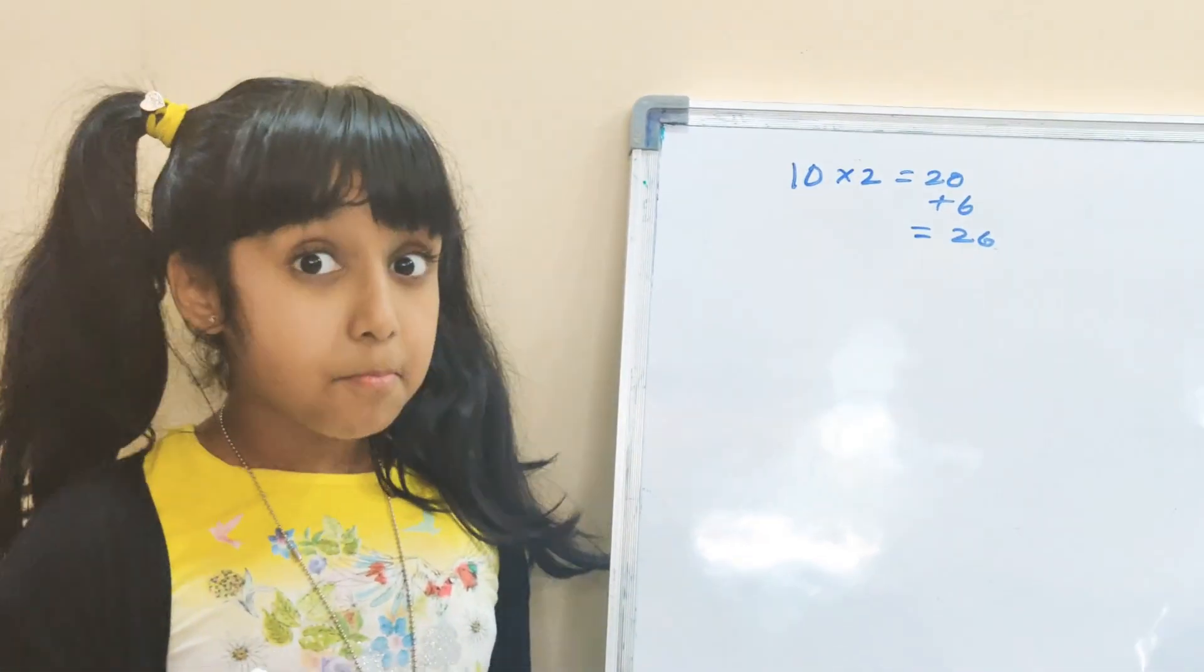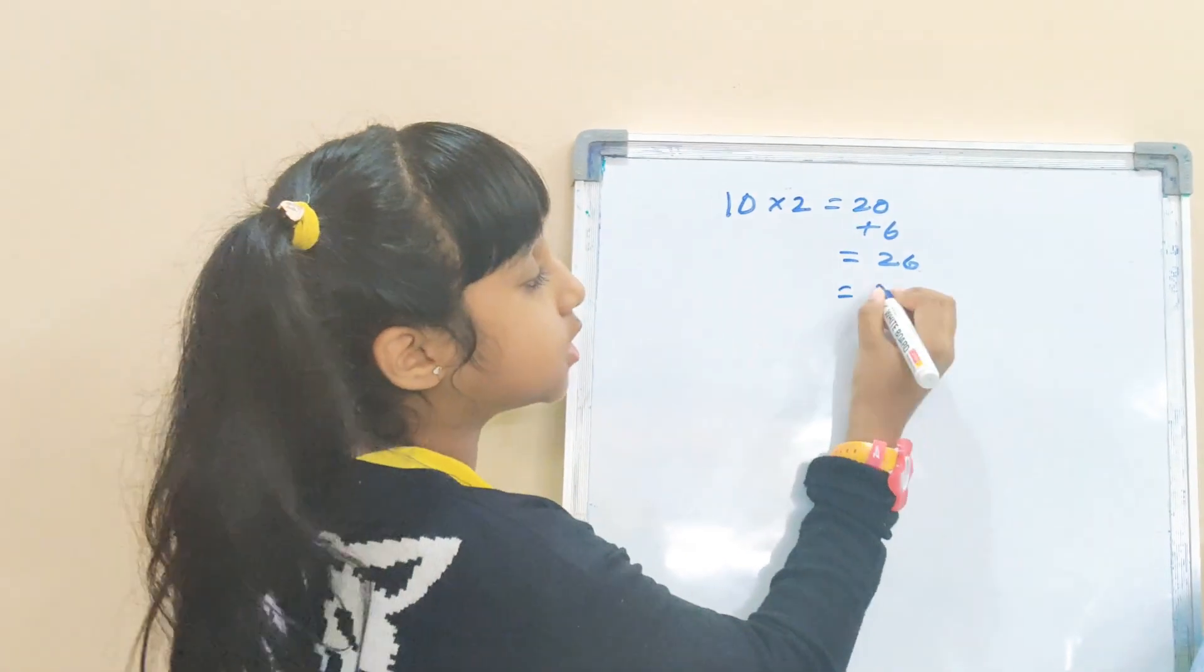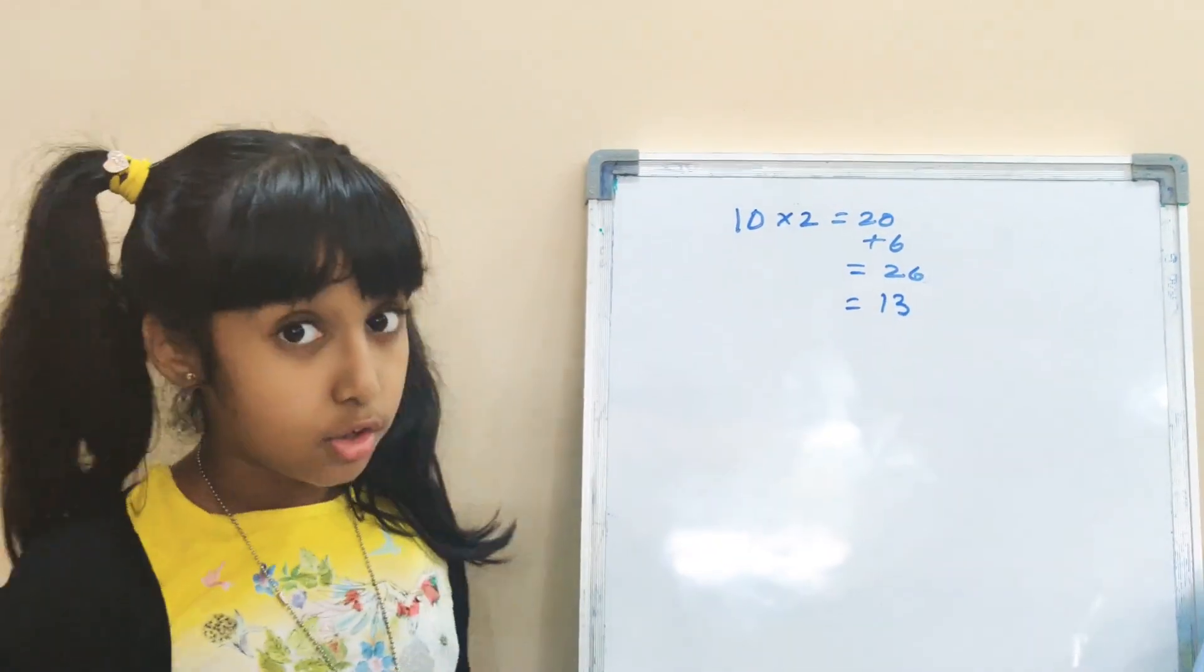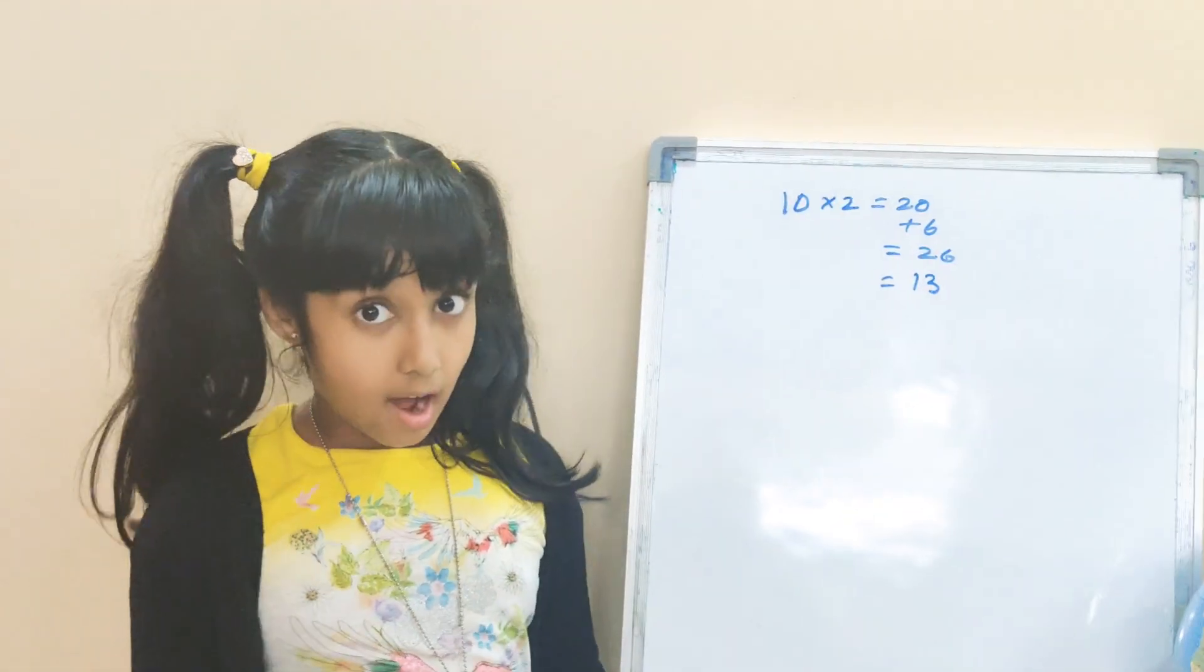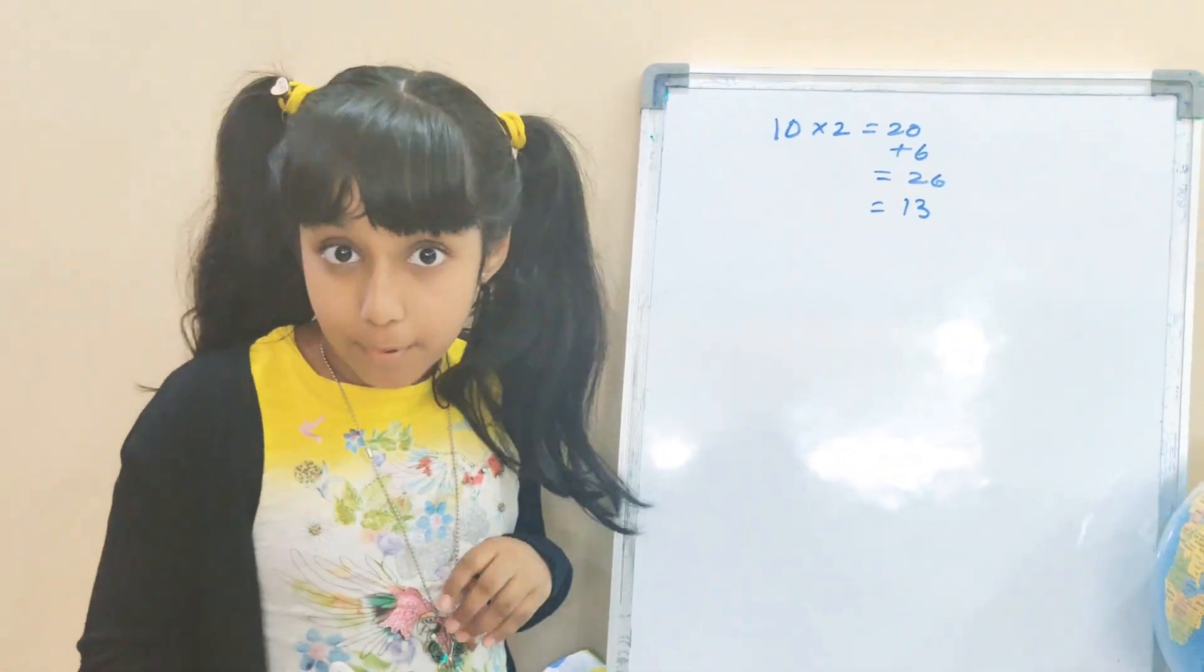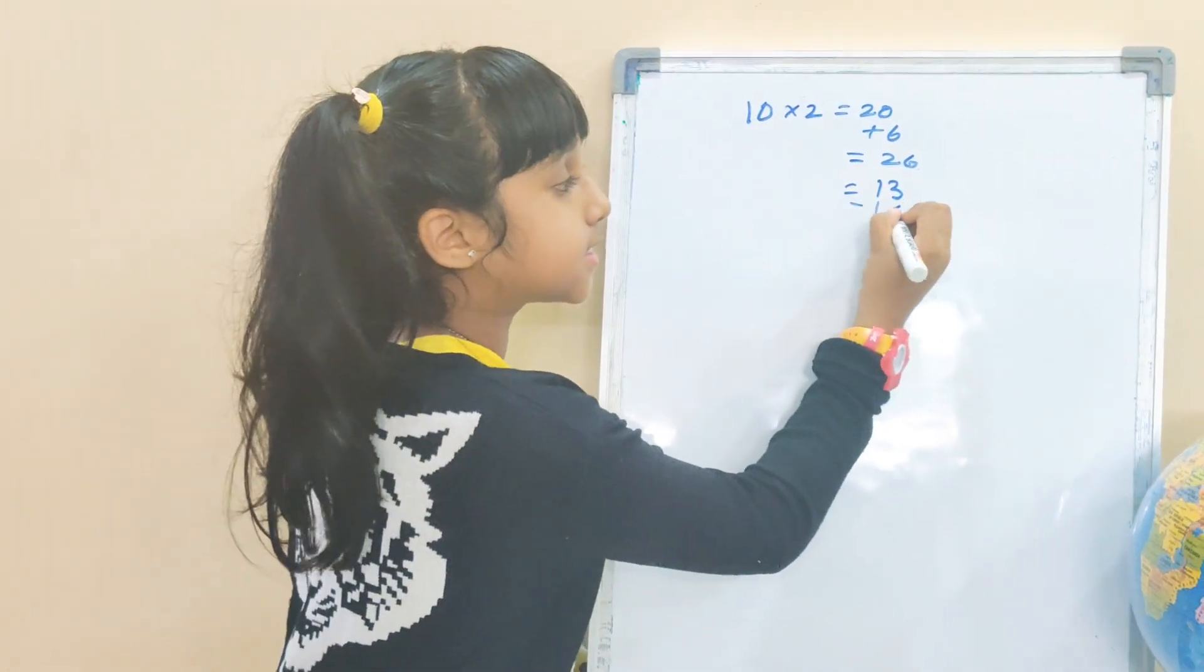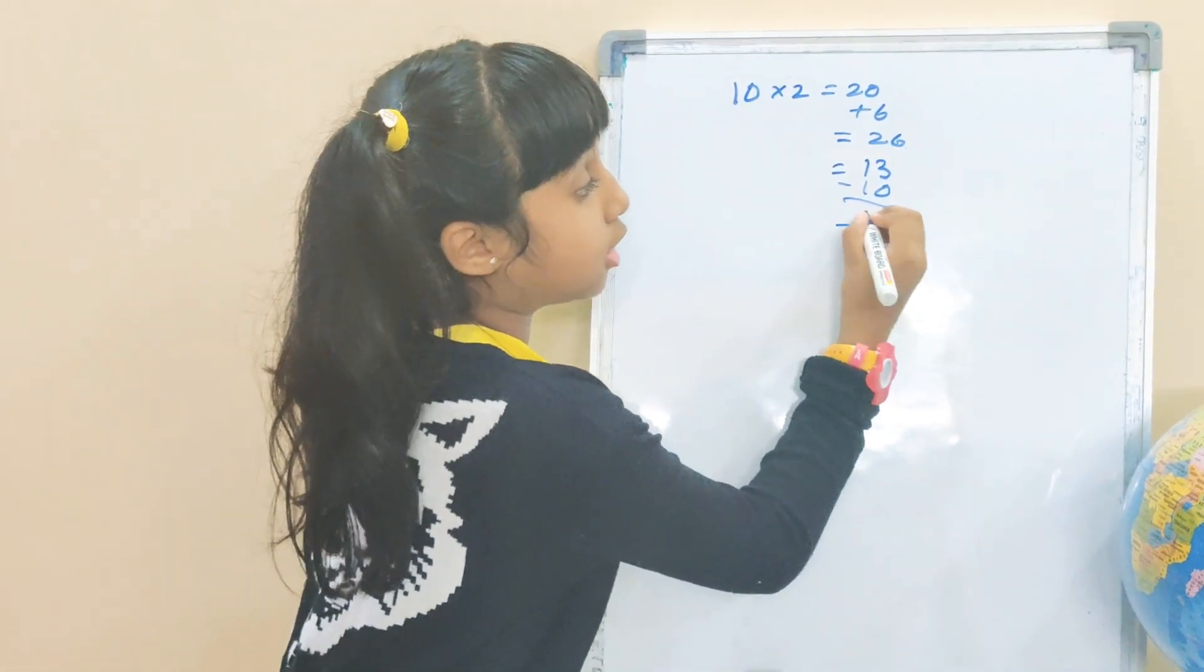My next step was half it, that is equal to 13. Now the last step was subtract the original number. The original number was 10, so minus 10 equals 3.